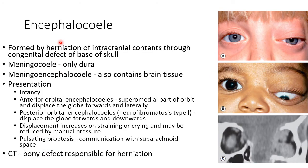Coming to encephalocele, it is formed by herniation of intracranial contents through a congenital defect of the base of skull. In case of meningocele, only dura is involved, whereas in case of meningoencephalocele, it also contains brain tissue.